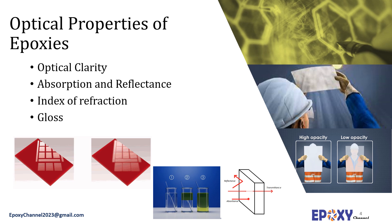Finally, surface luster or brightness is called gloss. A gloss meter is an instrument used to measure the specular reflection or gloss of a surface. Gloss is determined by projecting a beam of light at a fixed density and angle onto the surface and measuring the amount of reflected light at the equal but opposite angle.